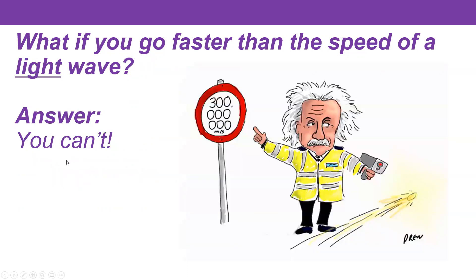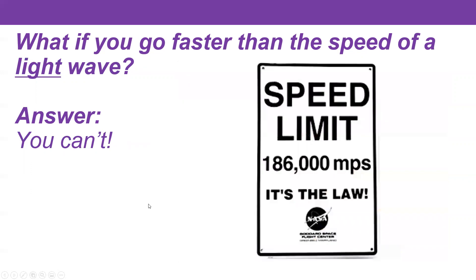And the answer is you can't. It appears to be one of those laws of physics that it's not possible to go faster than 300 million meters per second. I think one time I went to NASA — I think that's where I saw this speed limit sign. You can't go faster than the speed of light.